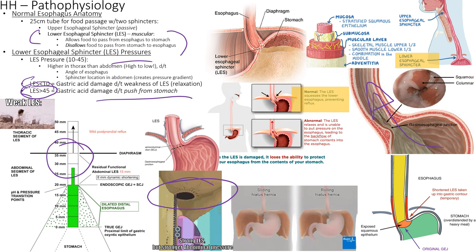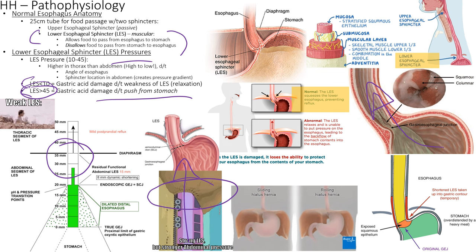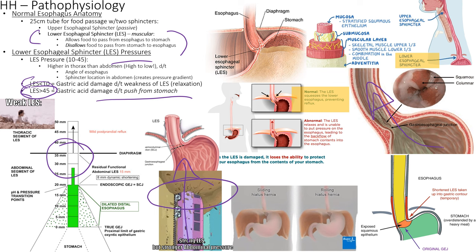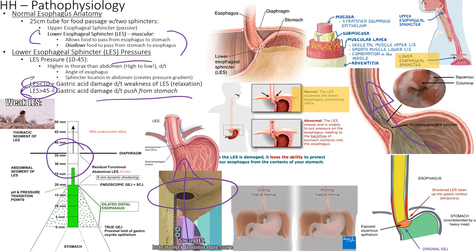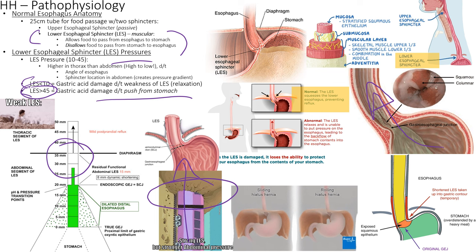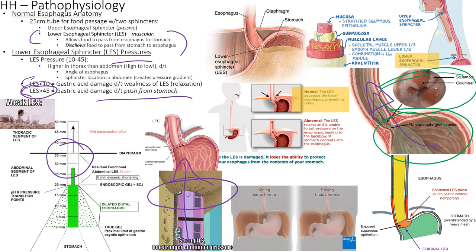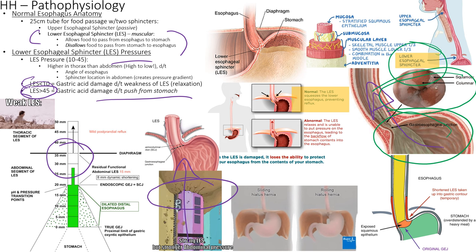High abdominal pressure can push past even a strong LES. Examples include pregnancy and ascites — fluid accumulation that acts like pregnancy in terms of pressure. Either way, too much abdominal pressure can push GI contents all the way up through the hiatus. So we can have either a weak LES, a too-wide hiatal opening, or a diet that causes transient LES relaxation, called TLESR.